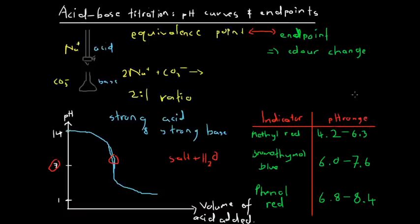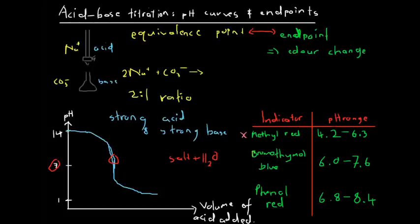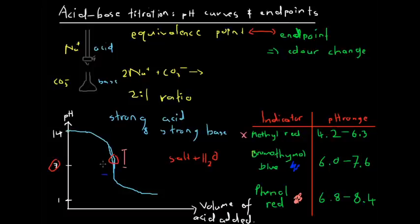Methyl red changes colour between a pH of 4.2 and 6.3 — a pH of 7 lies outside this range, so methyl red is not appropriate. Bromothymol blue and phenol red both have pH ranges that include 7. Phenol red will change colour in one region on the curve, and bromothymol blue in another. Either of these is appropriate because the sharp pH change means there's very little difference in the volume of acid being added — both indicators will change colour very quickly and very close to the equivalence point.